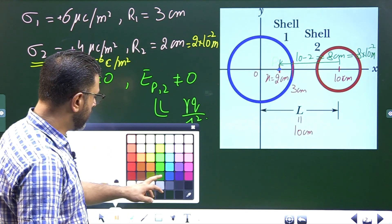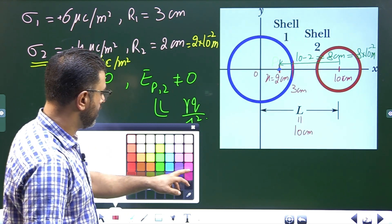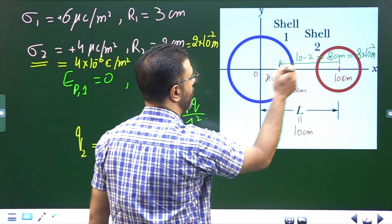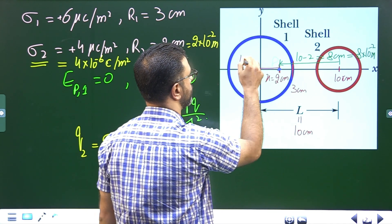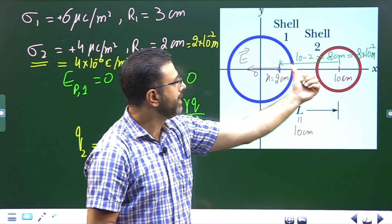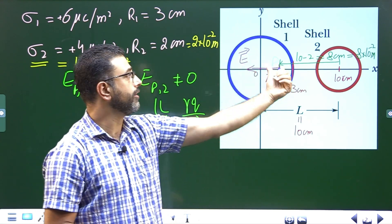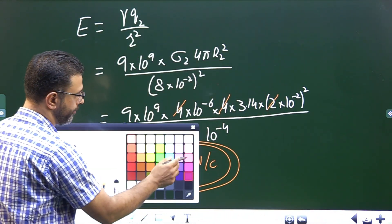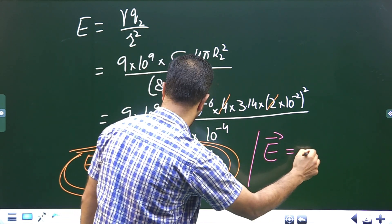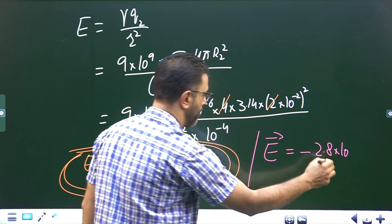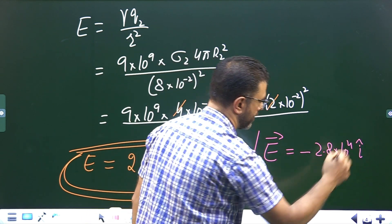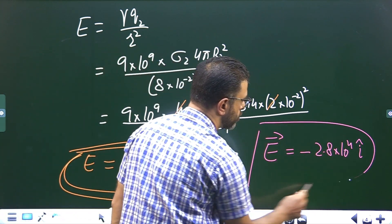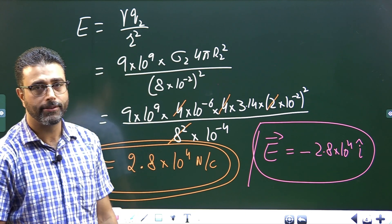Writing in vector form: shell two is positively charged so the field points away from the shell. The point is to the left of shell two, so the field is in the negative x direction. Therefore, the electric field vector is equal to minus 2.8 into ten to the power four i-hat, since the direction is in the negative direction of the x-axis.